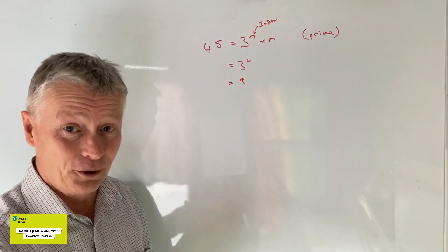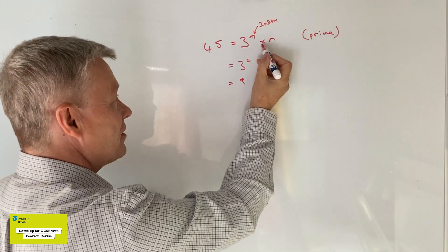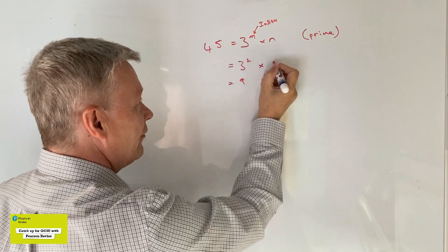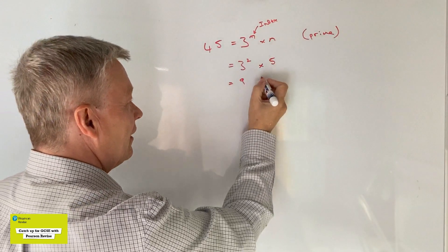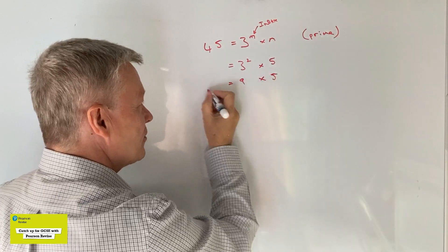Well actually that's looking really good because I can then say, well multiply by n, if I multiply that by 5, then I get 9 times 5.